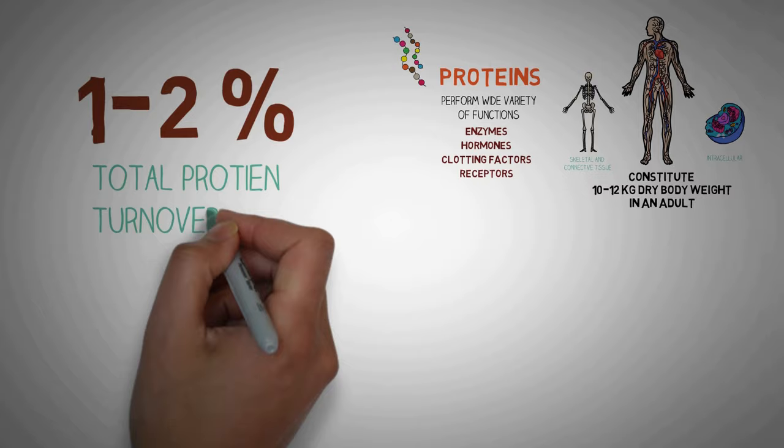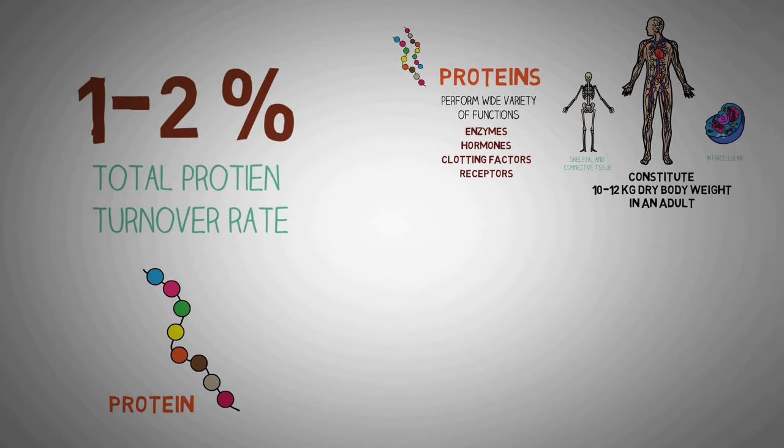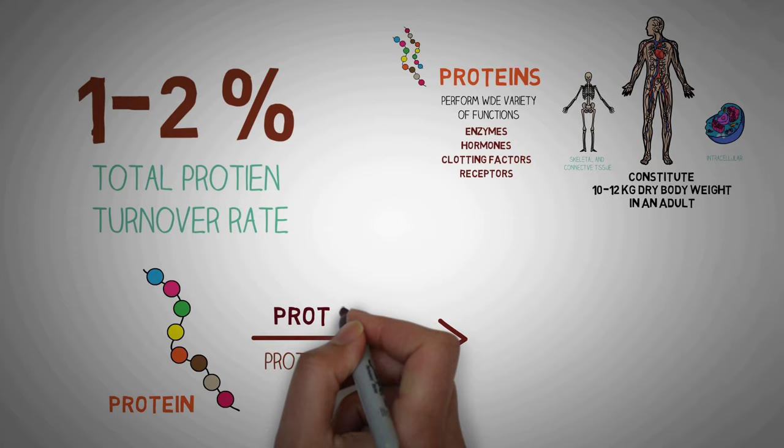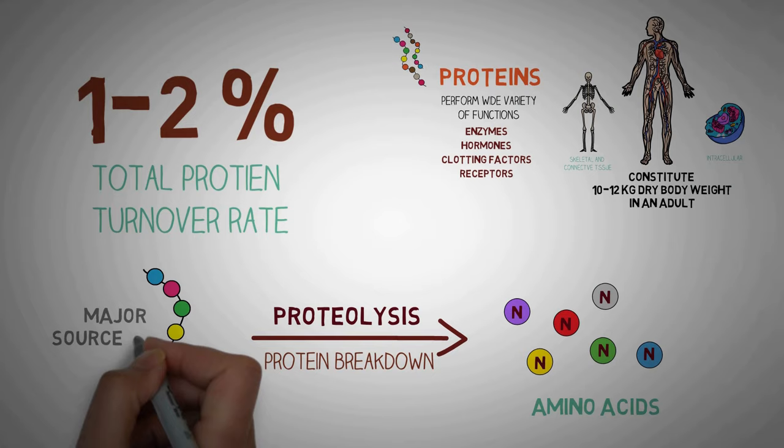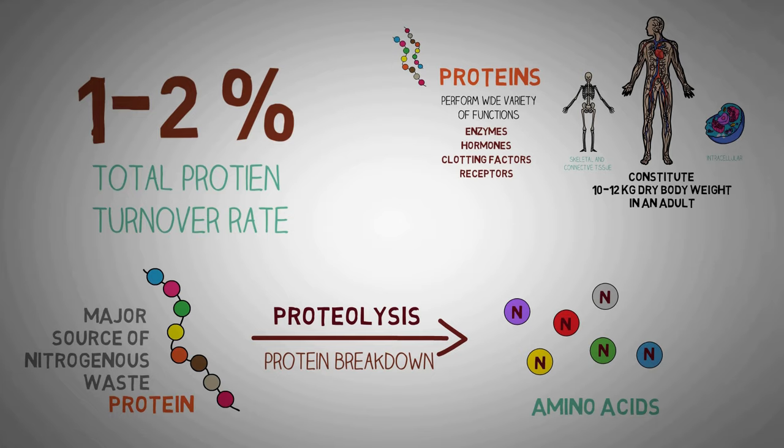Breakdown of proteins is known as proteolysis. And upon proteolysis, the proteins are broken down into individual amino acids. These amino acids are nitrogen containing compounds and the proteins are the major source of nitrogenous waste in our body. This waste is highly toxic and millions of proteins are broken down in our body every single day and that produces a lot of nitrogenous waste.